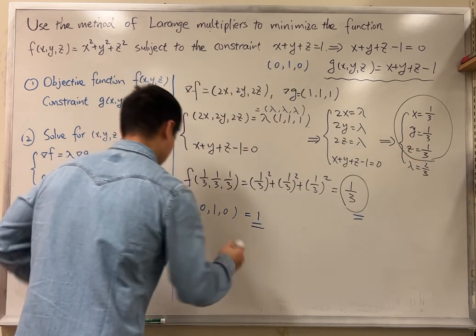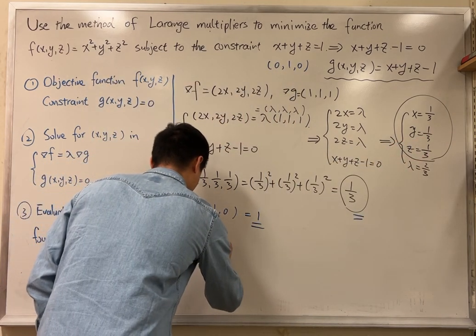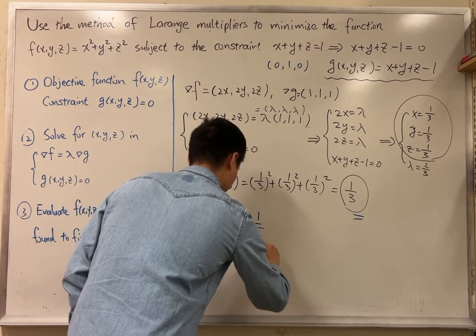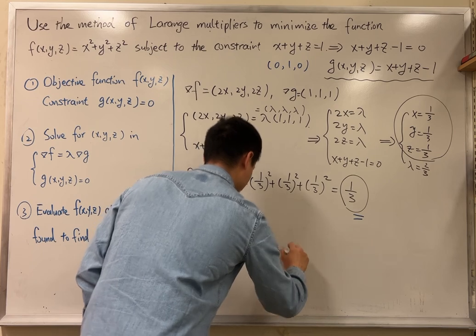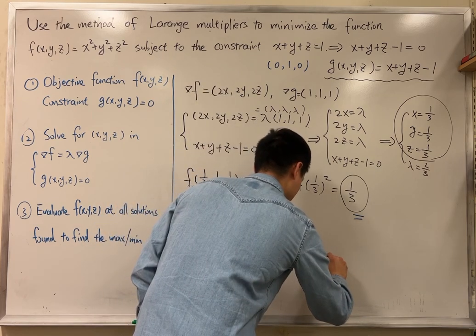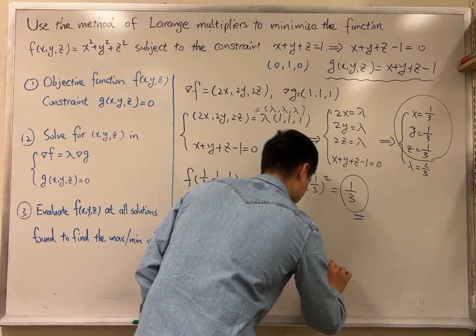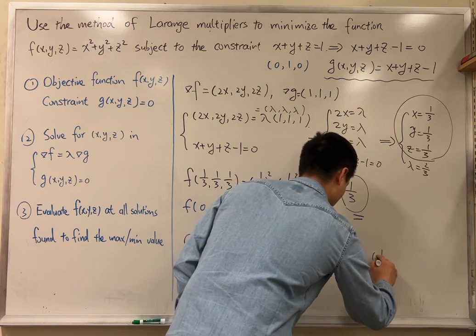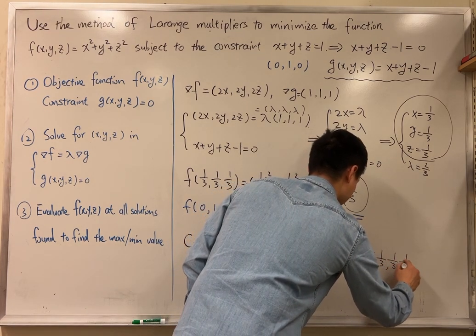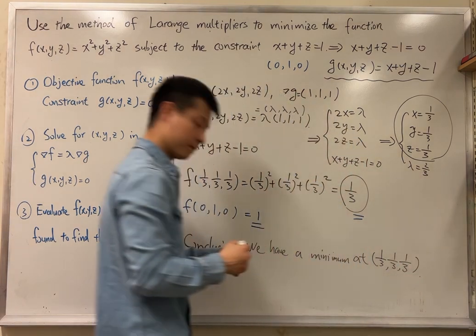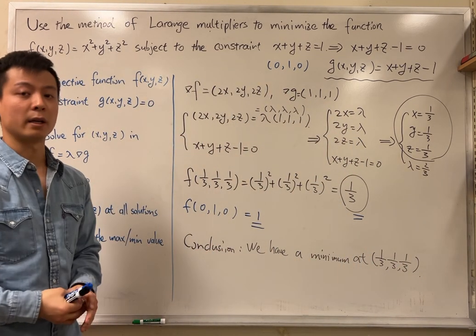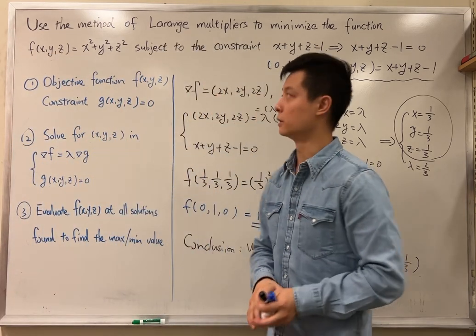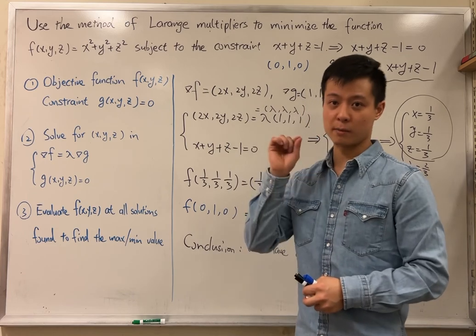So our conclusion right now is that we have a minimum at this point: 1/3, 1/3, and 1/3. That is how we use the method of Lagrange multipliers to find the minimum value of this function subject to the constraint.